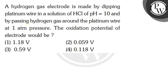Hello everyone, let's read this question. The question says: a hydrogen gas electrode is made by dipping a platinum wire in a solution of HCl of pH equal to 10, and by passing hydrogen gas around the platinum wire at 1 atm pressure. We have to find the oxidation potential of the electrode.